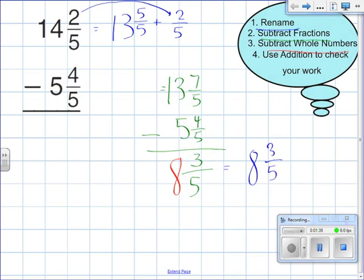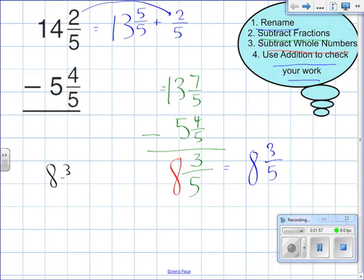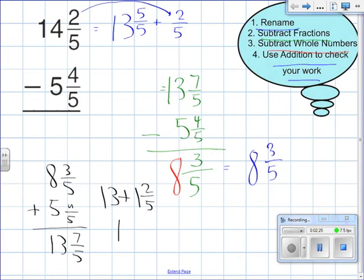I can check my work by adding 8 and 3 fifths plus 5 and 4 fifths. And that'll get me to 14 and 2 fifths with some regrouping. So 8 and 3 fifths plus 5 and 4 fifths gives me 13 and 7 fifths. And then I simply regroup. I turn that improper fraction, 7 fifths, into 1 and 2 fifths plus 13 and it gives me an answer of 14 and 2 fifths, which is what I have that solved my original problem.